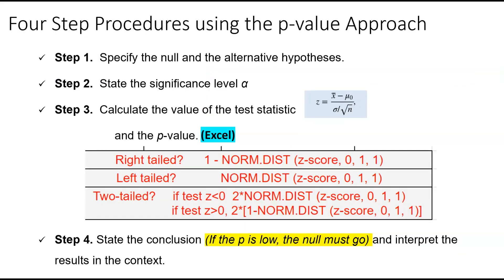This slide is super important — it gives you every step you need. First, we're going to do the null and alternative. Then we're going to state the level. Then we're going to calculate the test statistic. That z-score goes right into here. If it's a right-tailed test, we're looking at the alternative hypothesis — that's going to tell us what to type into Excel. Once we get our p-value, we're going to compare it to the significance level and then interpret the results.